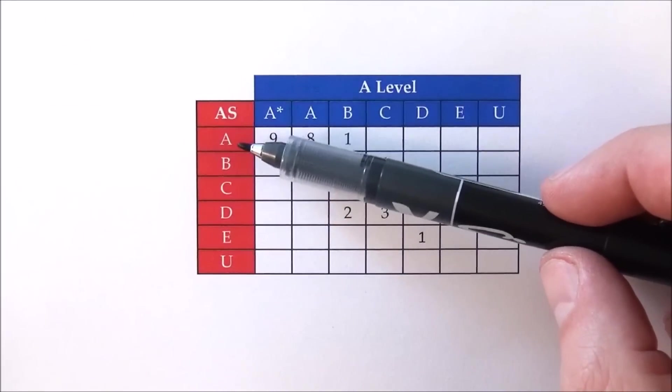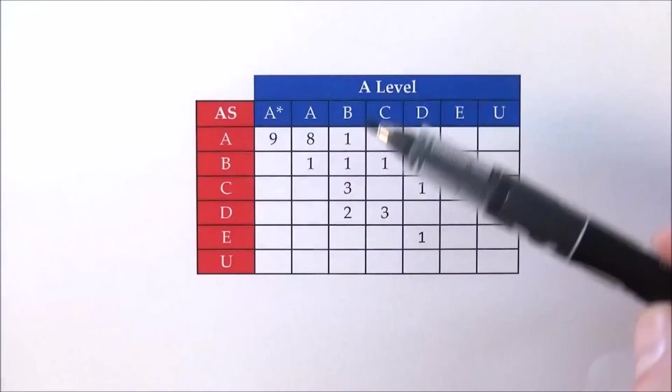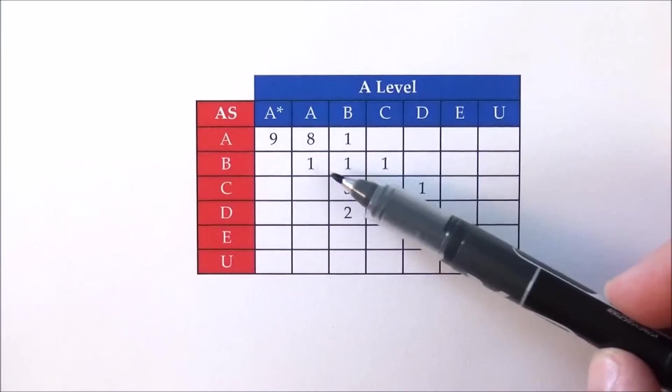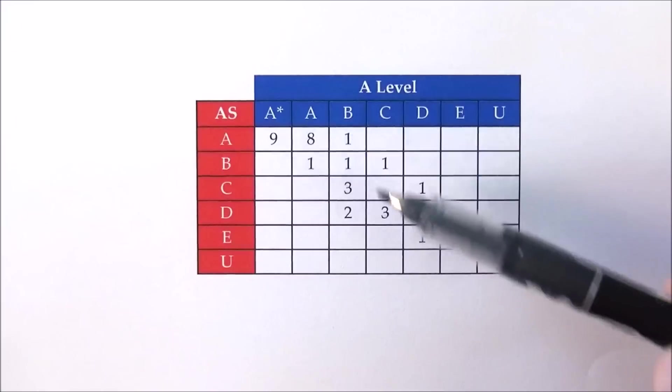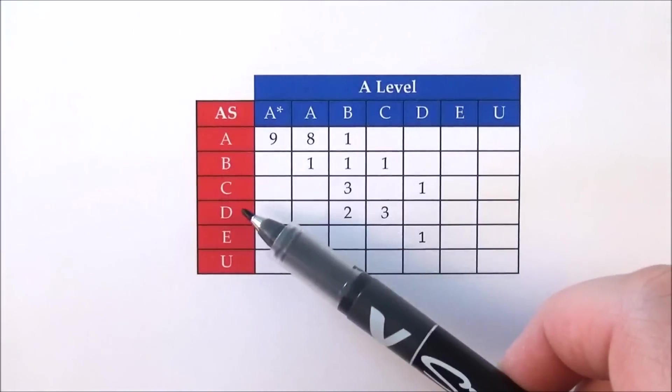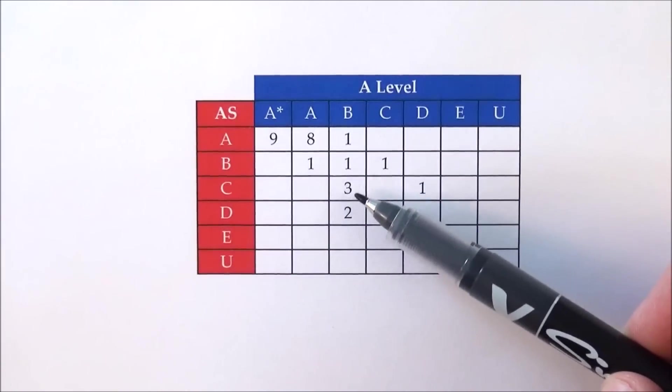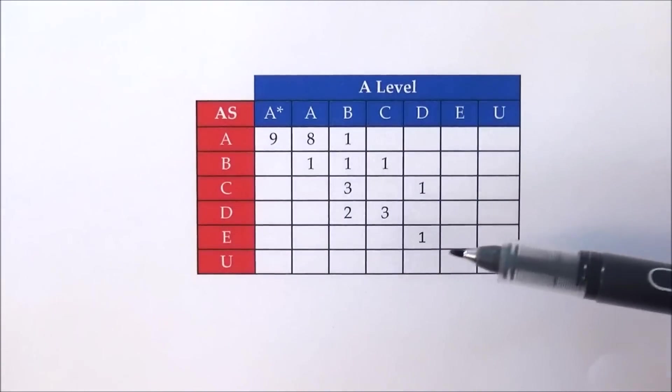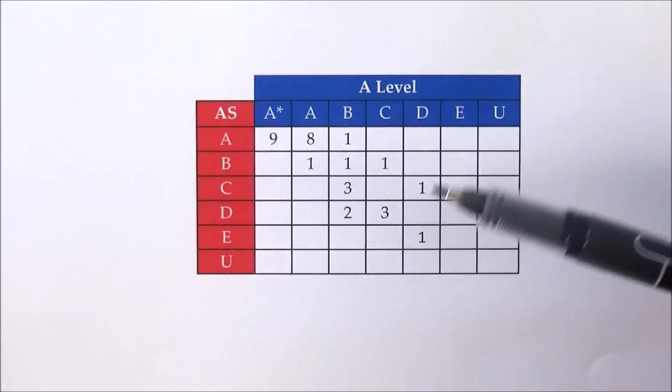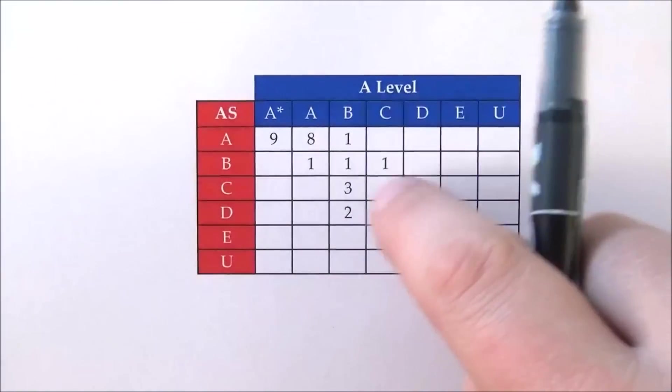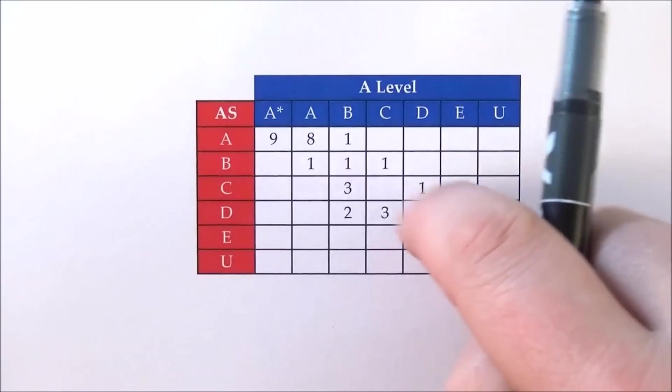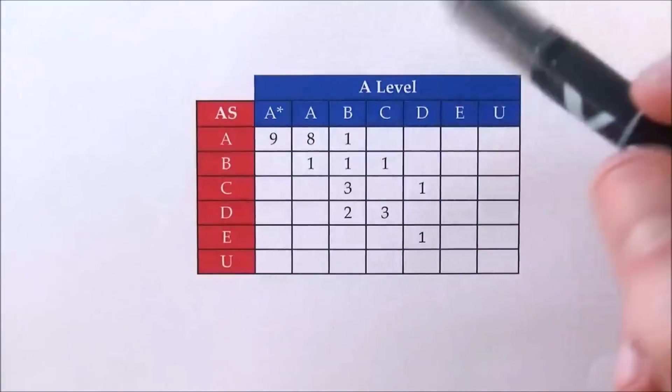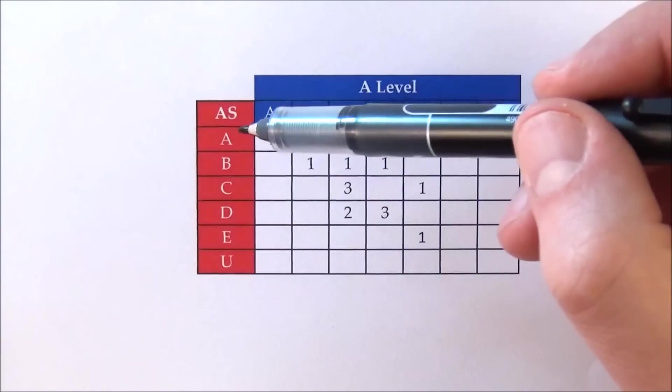In terms of people who got B's, they sort of tended to get that kind of grade. Even people who got C's, a lot of them improved it to a B, and even the students who got an E improved that. So basically everybody improved their grade pretty much by maybe one grade, perhaps maybe two, and only a couple of people did well at AS and kind of dropped down at A level.